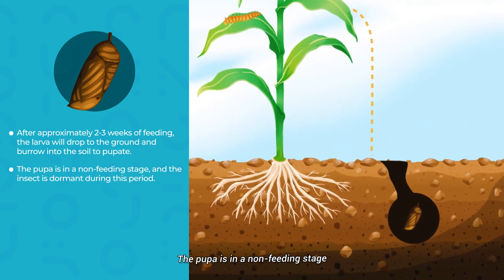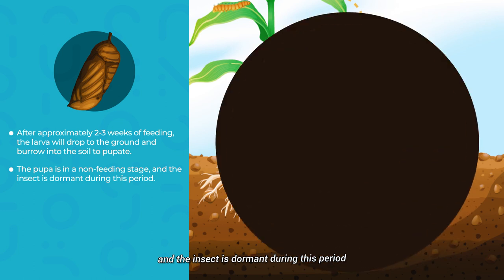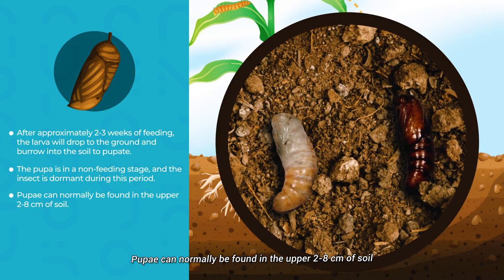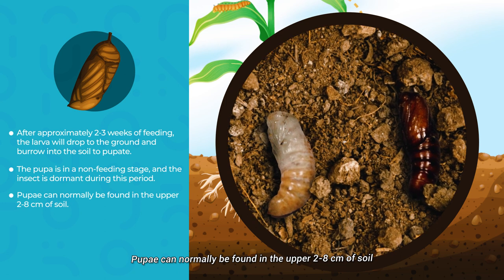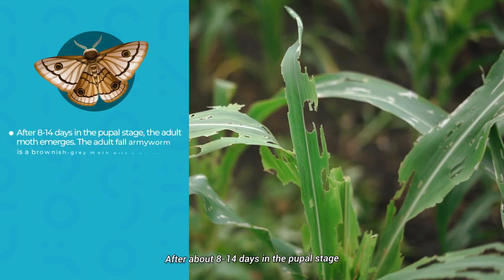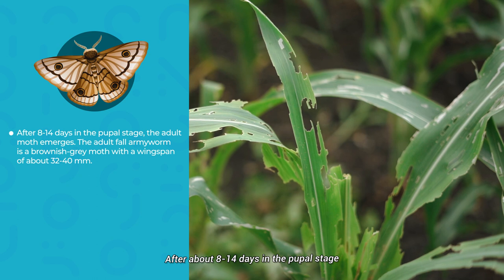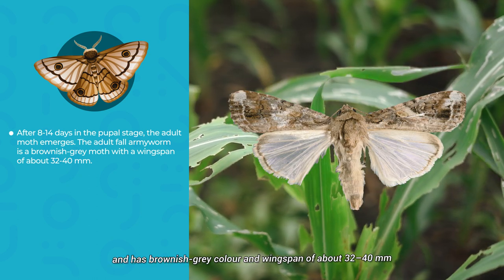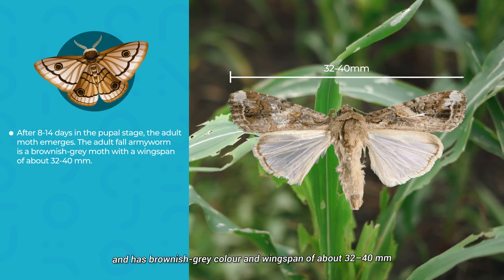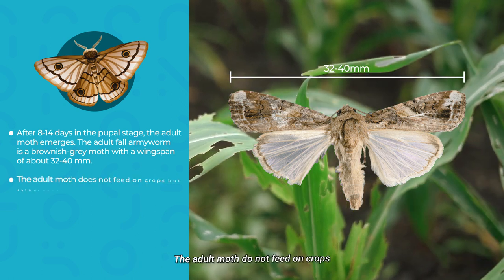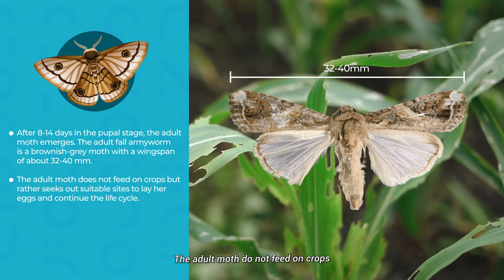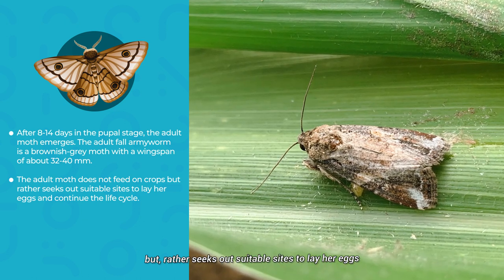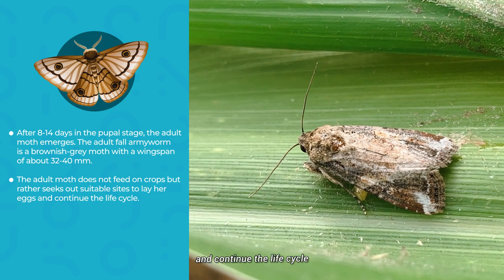The pupa is a non-feeding stage and the insect is dormant during this period. Pupae can normally be found in the upper 2 to 8 centimeters of soil. After about 8 to 14 days in the pupal stage, the adult moth emerges and has a brown to gray color and a wingspan of about 32 to 40 millimeters. The adult moth does not feed on the crops, but rather seeks out suitable sites to lay her eggs and continue the life cycle.